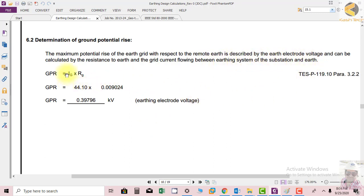We have the values, which is very simple. We have Ig, which is the grid fault current level, which is 44.1 kiloamperes, and we also have the resistance of our substation, which is 0.09024. This we have just calculated in my earlier lectures.